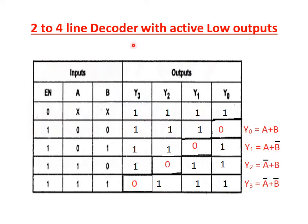Next, the 2-to-4 line decoder with active low outputs. Active low output means the selected output is represented as logic 0 level, while the remaining all outputs are represented as logic 1. So active low output representation means the selected output is represented as 0. The enable input used here is active high enable. When the enable input is 0, the output is 1,1,1 — that is, the decoder is deactivated. When the enable input is high, the decoder is activated.